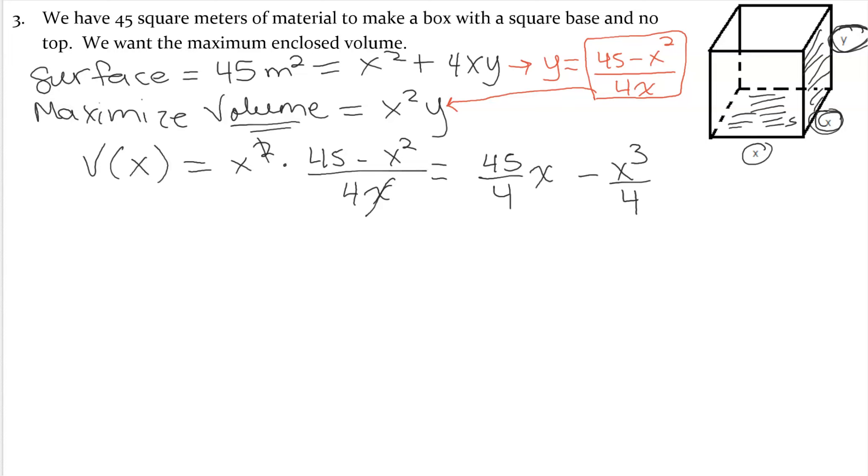Okay, then we would say the derivative of the volume is going to be 45 over 4 minus 3 over 4 x squared. Now to find the critical point, we would set that equal to 0. When we do set that equal to 0, we will have 45 equals 3x squared, so x squared equals 15.